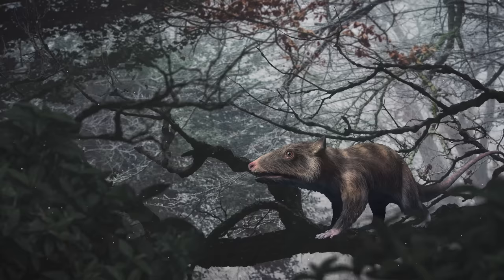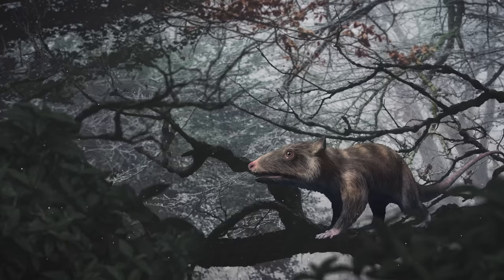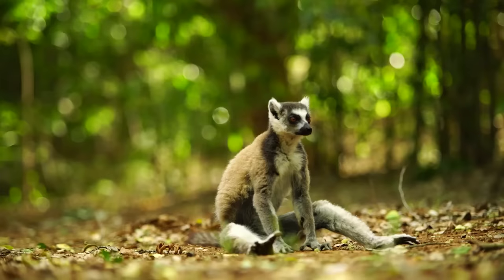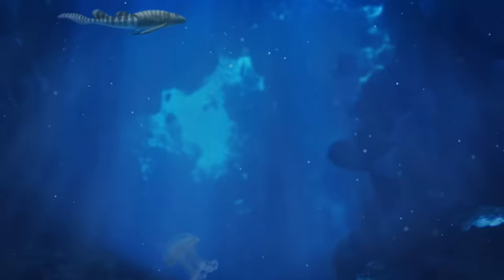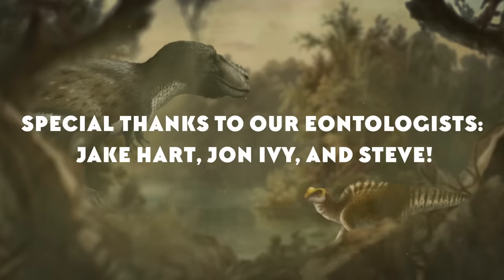Your immediate ancestors are upright walkers and tool users. But your distant ancestors were small, tree-dwelling creatures, like Purgatorius, that would go on to diversify into the incredible array of lemurs, lorises, monkeys, and apes alive today.